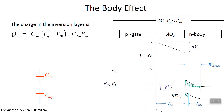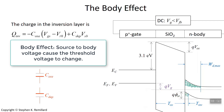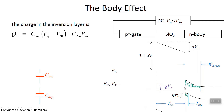When a potential difference between the source and the body is present, the threshold voltage changes. So let's go back and talk about threshold. There are two charge regions in a MOSFET that's operating beyond threshold — that is, in inversion. There's the depletion charge, and there's the inversion charge.